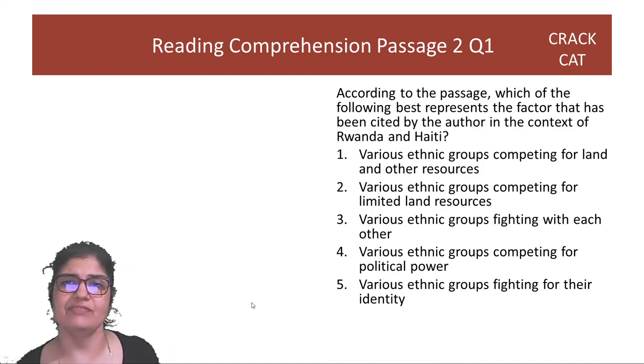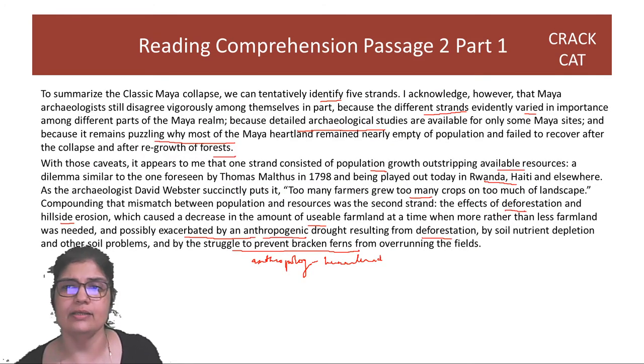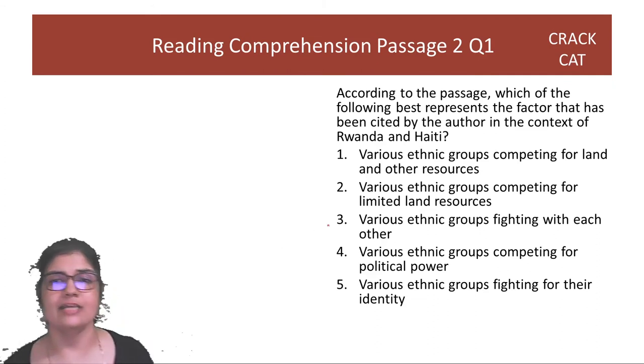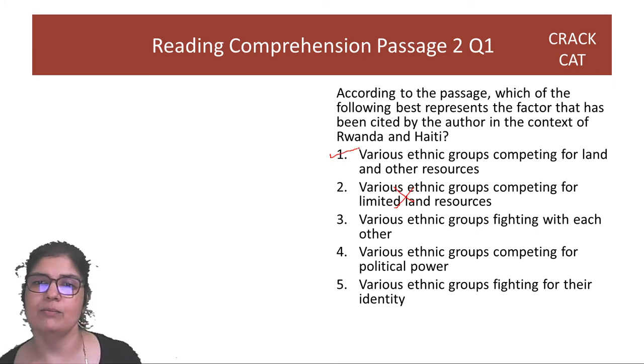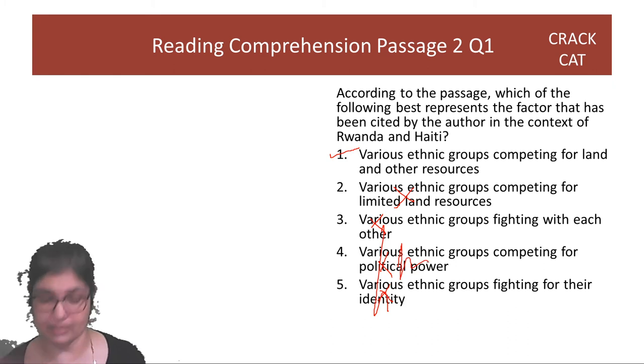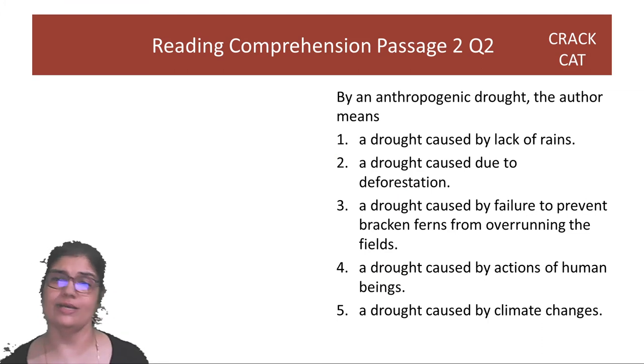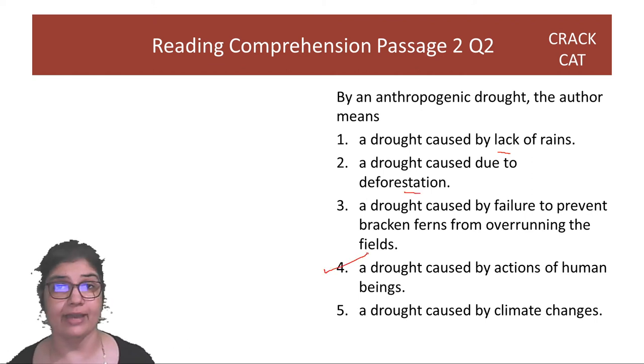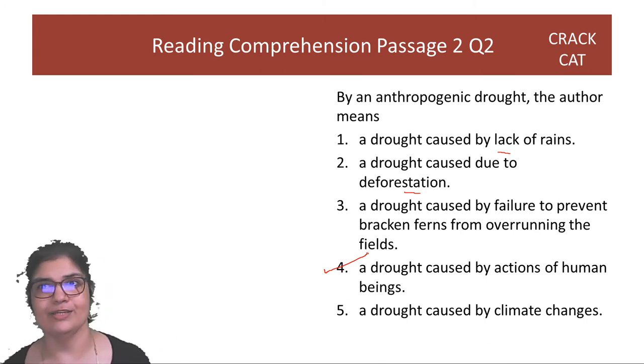Question one: According to the passage, which of the following best represents a factor that has been cited? Land is of course a factor. But is it only land? It says outstripping available resources. So it's not just land. Land is one of the resources. So the answer here is first option because it is not just land—second option is limiting it to land when land was just an example. So they're competing for land and other resources. Rwanda is only for land and other resources. All these other factors had not been mentioned when we had that example of Rwanda.